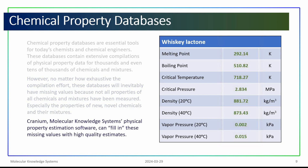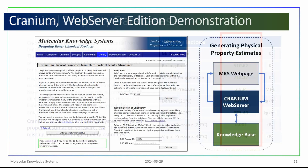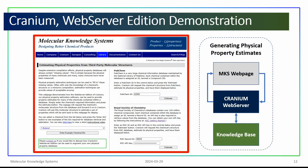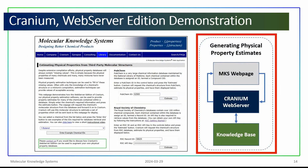Cranium, Molecular Knowledge System's physical property estimation software, can be used to fill in these missing values with high quality estimates. To demonstrate how Cranium works, we prepared a webpage that requests chemical structure information from third-party databases, and then sends this structural information to a web server edition of Cranium running in the cloud. Cranium generates physical property estimates that are then sent back to this webpage for display.